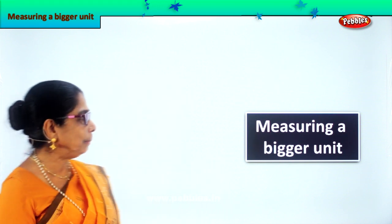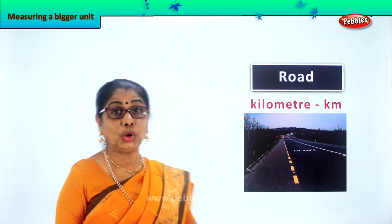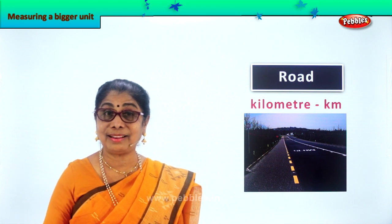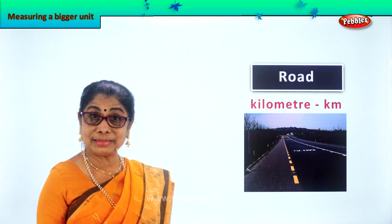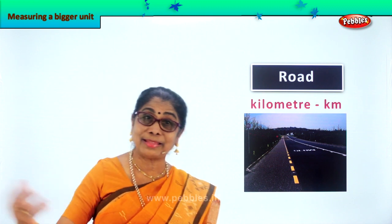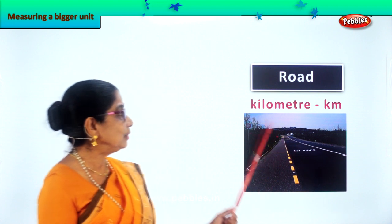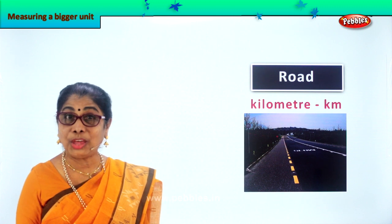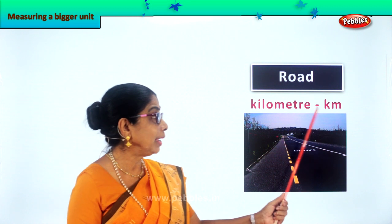Let's look at our first picture. Now all of us love to make road journeys — in the cycle, in the car, or in a big bus. You go on picnics or you might like to go and see your grandma in another state. So when you talk about a road journey, you calculate in kilometers — the bigger unit. Kilometer, short form: km.